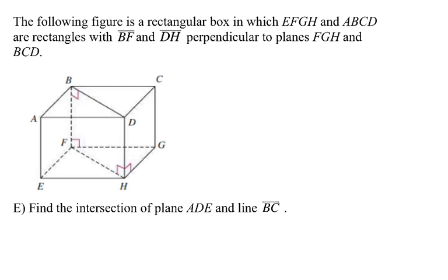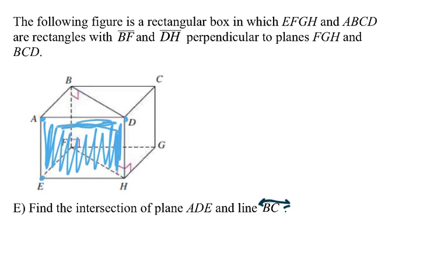Find the intersection of the plane ADE and the line BC — that arrow goes infinitely far in both directions. ADE: there's A, D, and E. The plane that includes those three points is essentially the front of this box. And the line BC is back here, which is not on the front of the box at all. I don't believe that line will ever touch or intersect that plane, so the intersection of these two would be the empty set.